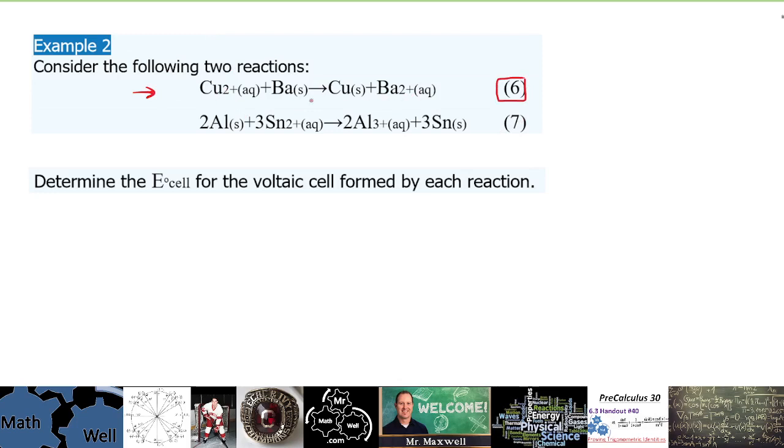Now this is a reaction, it appears to be a redox reaction because we have an ion of copper turning to solid copper. So copper is gaining or losing electrons, what's happening to it?